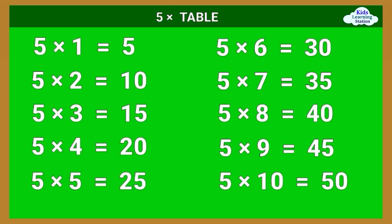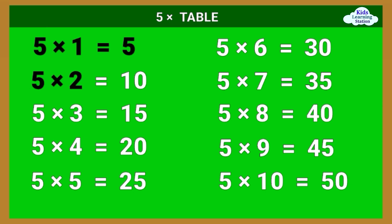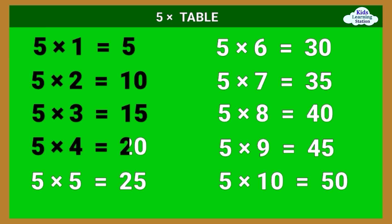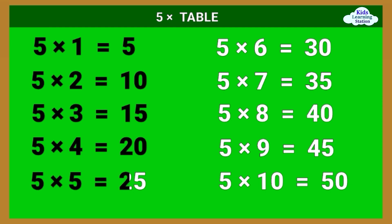5 times table: 5 times 1 equals 5, 5 times 2 equals 10, 5 times 3 equals 15, 5 times 4 equals 20, 5 times 5 equals 25.